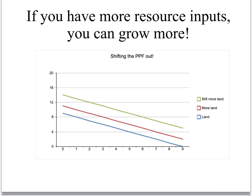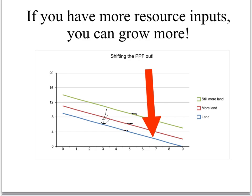What happens when you have more resources? Here's land, here's more land, here's still more land — you get more of everything. More resources, more stuff. Fewer resources, less stuff. The less you have, the fewer roses and poppies you can grow.